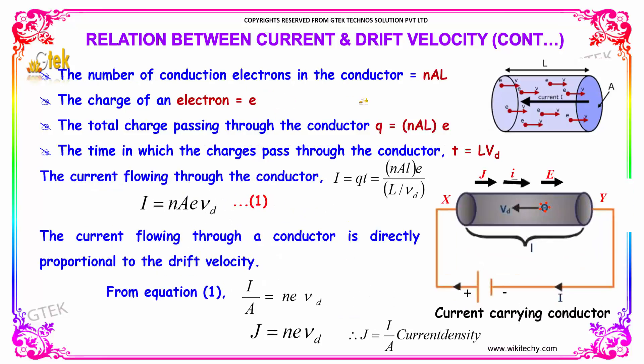The number of conduction electrons in the conductor is n into A into L. The charge of an electron is e, the total charge passing through the conductor Q is equal to n into A into L into e. The time in which the charges pass through the conductor is given by T is equal to L divided by the drift velocity Vd.